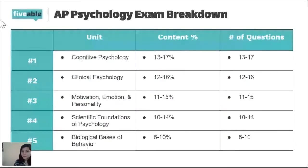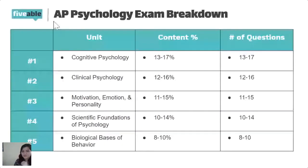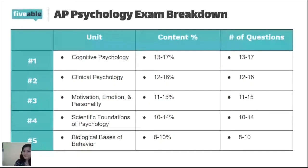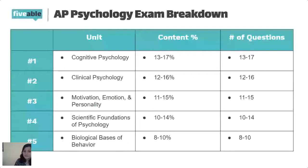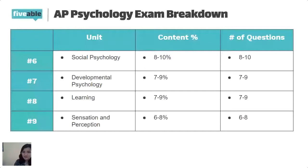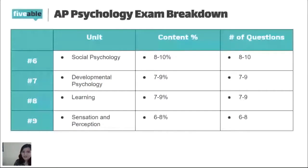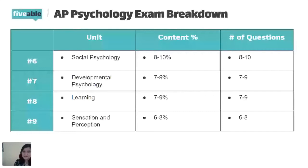Breaking down the multiple choice questions specifically: cognitive psychology is worth 13 to 17%, clinical psychology is 12 to 16%, motivation, emotion, and personality is 11 to 15%, scientific foundations of psychology at 10.4%, and the biological basis of behavior from 8 to 10%. We also have social psychology from 8 to 10%, developmental psychology 7 to 9%, learning also 7 to 9%, and sensation and perception.